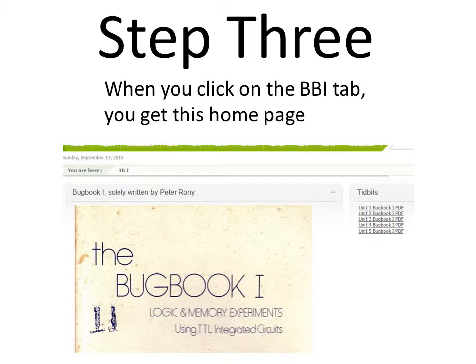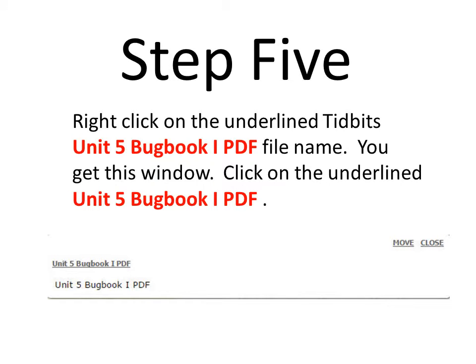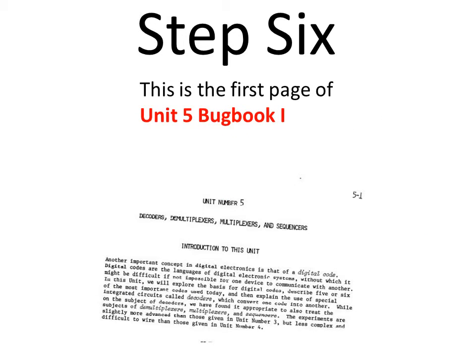Take a look at the group of five tidbits on the upper right. Here they are. In this video, we are going to click on Unit 5 of Bugbook 1. It's a PDF file. Here we've done so, and we get this window. The next step, you need to click on the underlined Unit 5 Bugbook 1 PDF. And when you do, you come to the first page of Unit 5 in Bugbook 1.